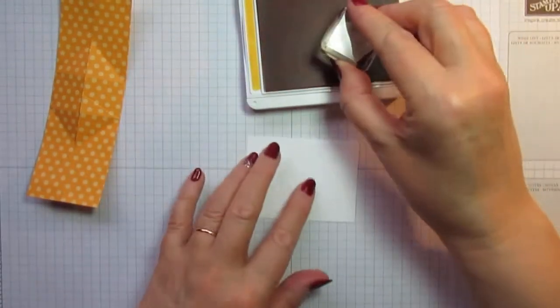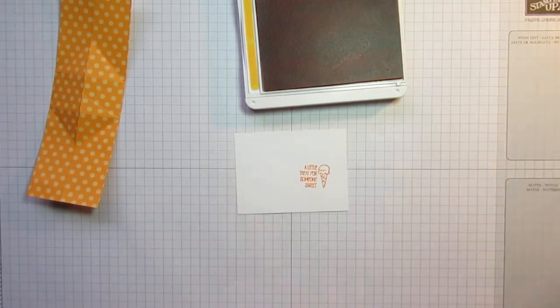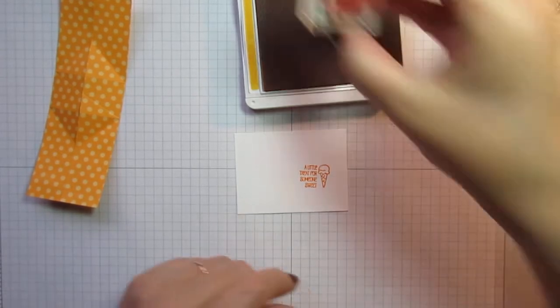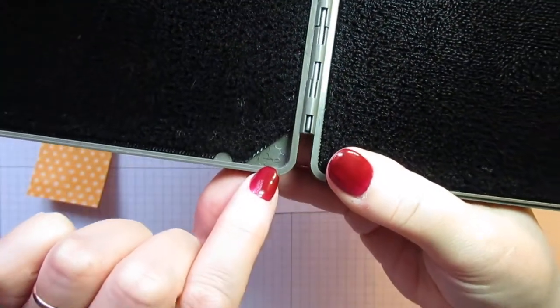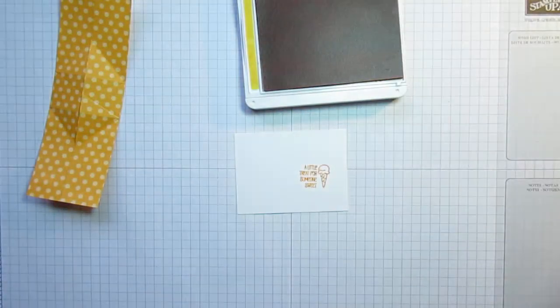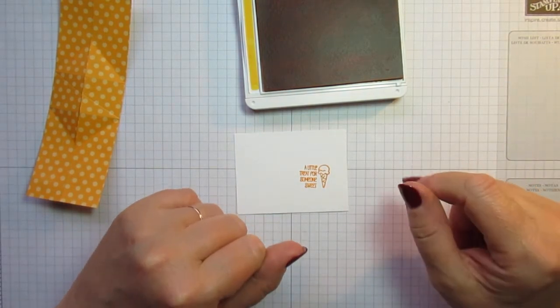I used Mango Melody ink to stamp the sentiment. So just ink up the stamp and stamp it straight onto the Whisper White. Just give my stamp a clean at the side. And you probably heard me washing it. So if you don't have a stamping scrub, I suggest you get one. This is one of the best tools I ever bought for my stamping. One side washes, one side dries. And if you can see on here, there are little raindrops to tell you that that's the washing side. And a little sun on that side to tell you that that's the drying side. And you can buy the stamp cleaner, which is in a spray bottle as well. So I absolutely love it. And I wouldn't be without it now.